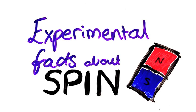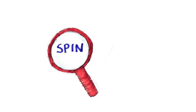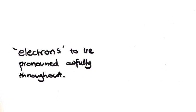In this video we're going to start looking at something called spin. Spin was something that was only discovered when people started experimenting on very small things like electrons. I'm going to tell you about some of the experimental facts that they found.